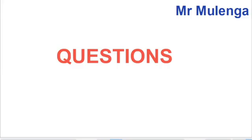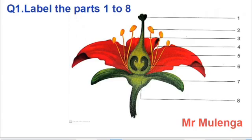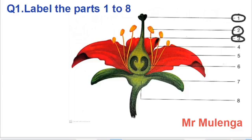Let us now try to answer some questions that may come in an exam on this part. Question one asks us to label parts one to eight. Part one is the stigma. Part two is the anther. Part three is the style.